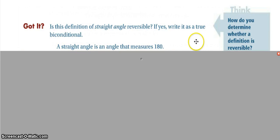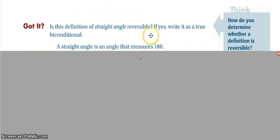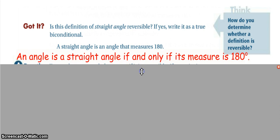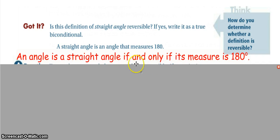When checking if a definition is reversible, flip the order of the sentence. A straight angle is an angle that measures 180 degrees. Flipping it: if an angle measures 180 degrees, then it is a straight angle — that is still true. The reverse of the statement is true, so we can write the bi-conditional: an angle is a straight angle if and only if its measure is 180 degrees.